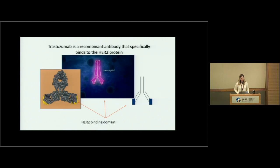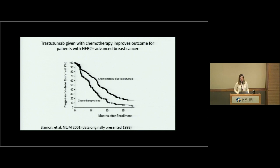Trastuzumab was the product of that work — it's a recombinant antibody protein. Herceptin's ends bind to the HER2 binding domain, and that's how trastuzumab works. A very exciting study published in 2001 showed that patients with HER2-positive breast cancer who had had a lot of prior treatment did much better when they received trastuzumab together with chemotherapy. This was a really exciting first study showing that targeting HER2 was really effective.